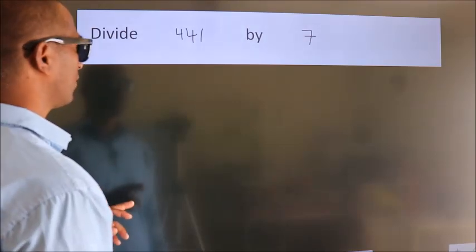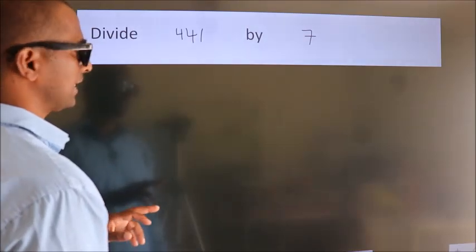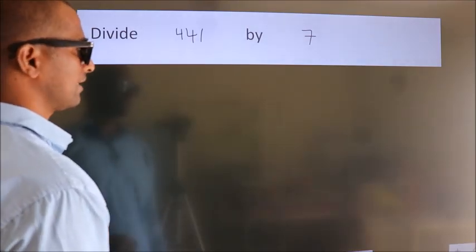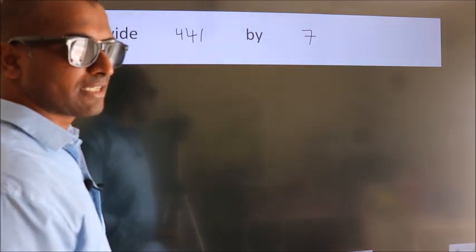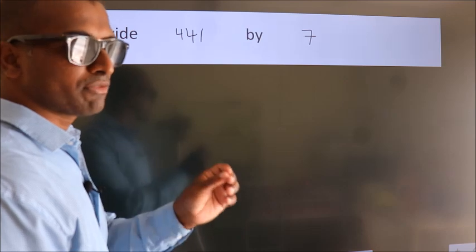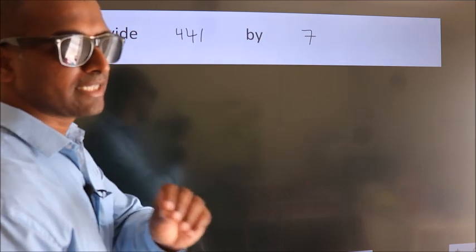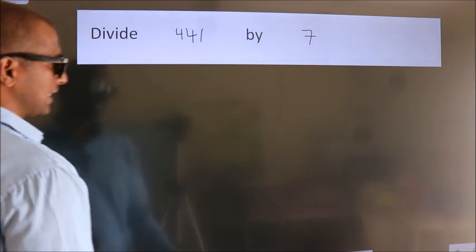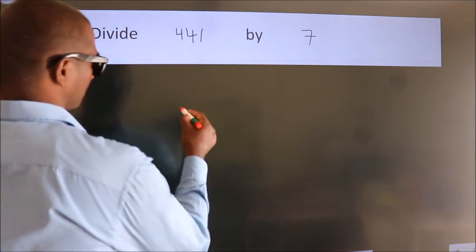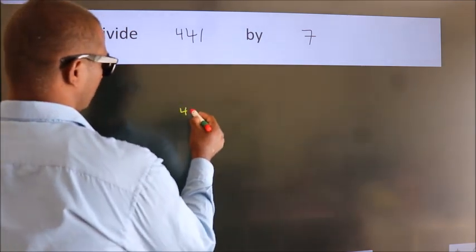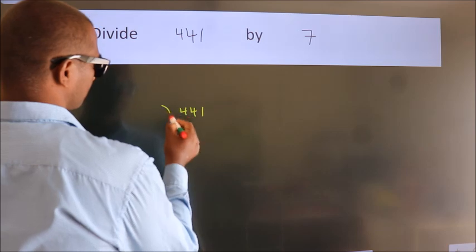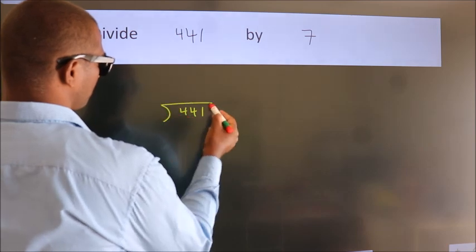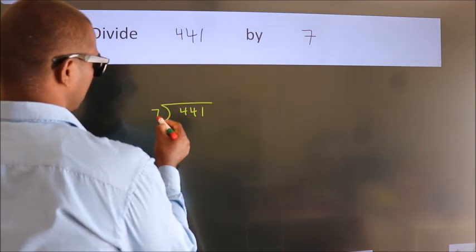Divide 441 by 7. To do this division, we should frame it in this way: 441 here, 7 here.